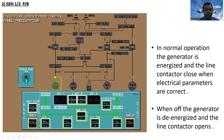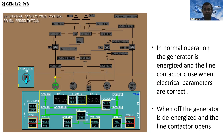Next is the GEN 1 or 2 push button. In normal operation, the generator is energized and the line contactor closes when electrical parameters are correct — parameters like 400 Hz and 115 volts. When we push the GEN 1 push button, the line contactor closes and it starts to energize the aircraft. When set to off, the generator is de-energized and the line contactor opens. The same applies to GEN 2.